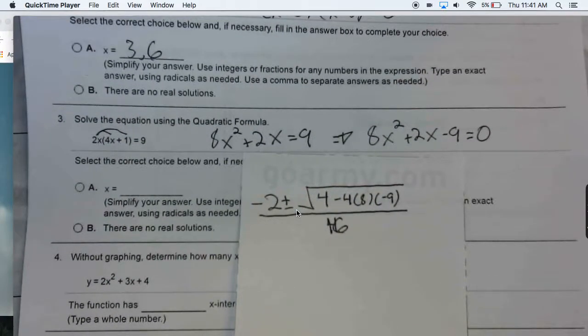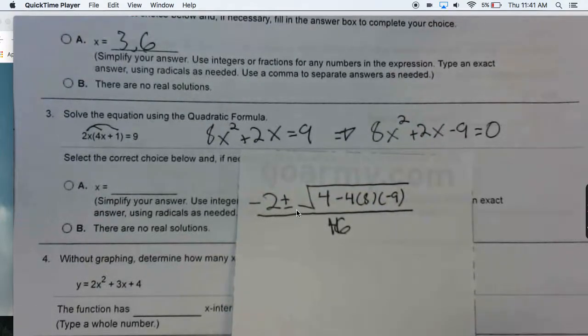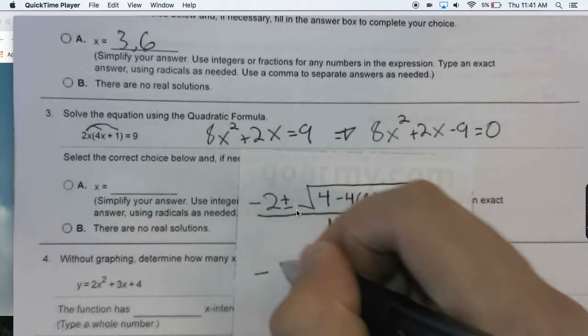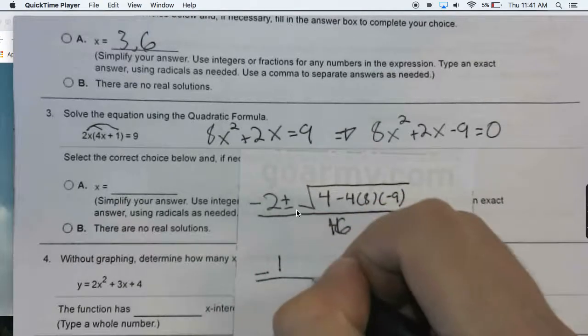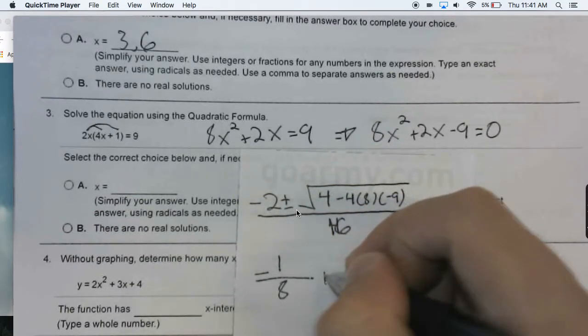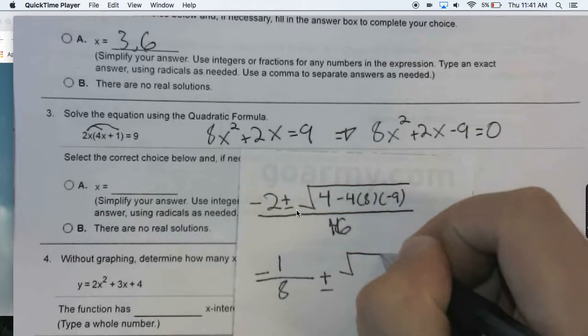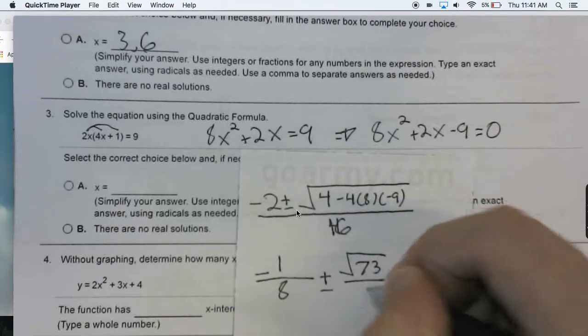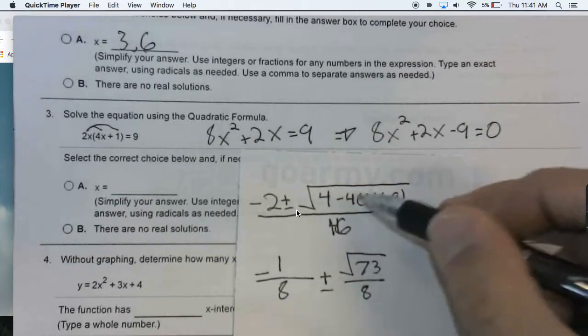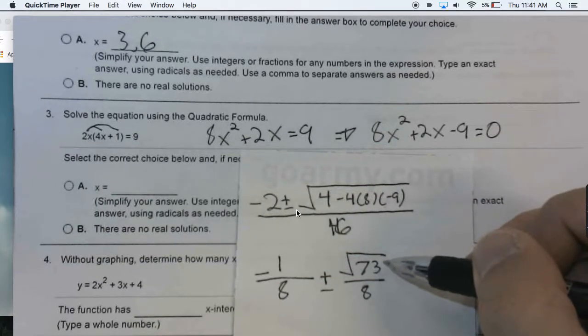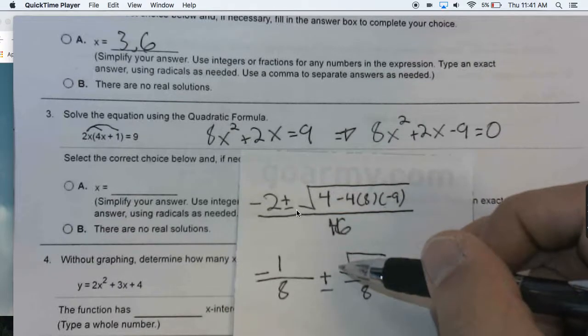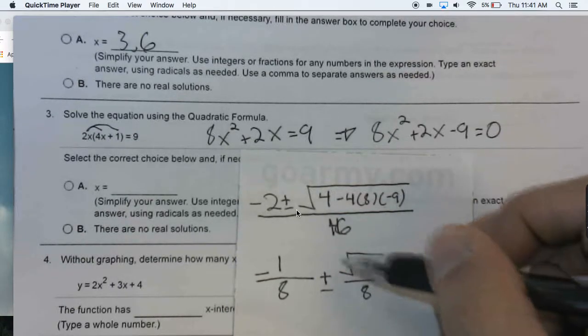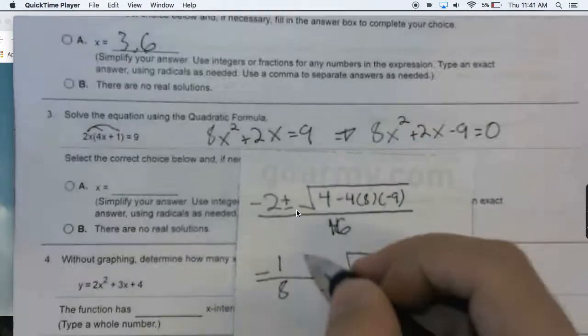First fraction you could rewrite as just negative 1 over 8, and then plus or minus what eventually could be the square root of 73 over 8. And this is after you simplify the arithmetic in here. You can factor out 4, and then you can rewrite 2 over 16 as denominator 8. So this would be your answer.